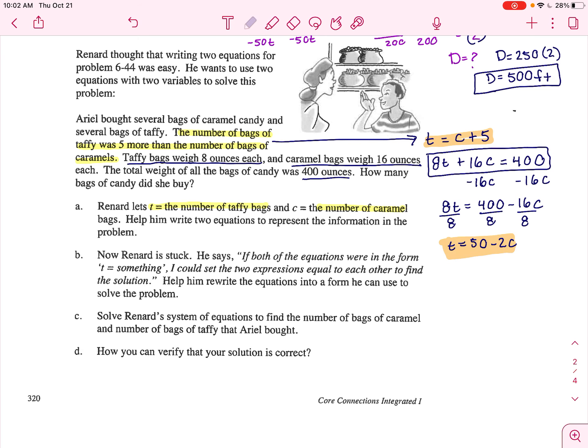So let's set them equal to each other. So I'm going to say C plus five equals 50 minus 2C.